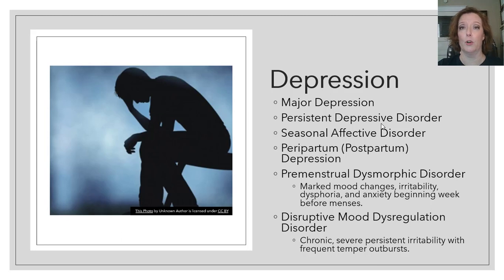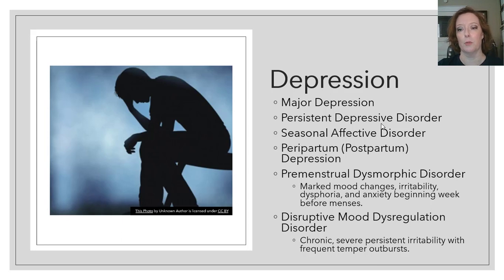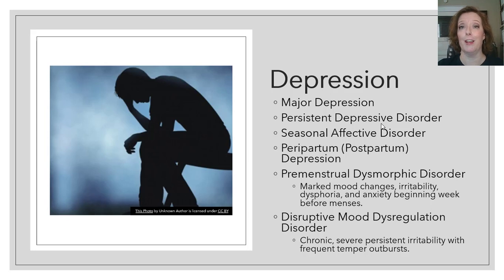We're going to go over the first four disorders in more detail, but the last two: premenstrual dysmorphic disorder involves mood changes, irritability, dysphoria, and anxiety beginning about a week before a girl starts her period. Disruptive mood dysregulation disorder involves chronic severe persistent irritability with frequent temper outbursts, and is typically a disorder found in children. Go ahead and grab your notes and let's get started.